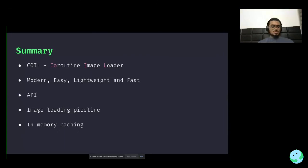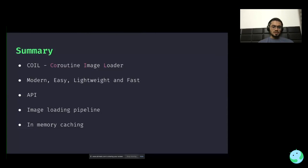This brings us to the end of this talk. To summarize: we saw what COIL exactly is, the various reasons why you should consider this library, how you can utilize the Java and Kotlin APIs, that it has support for Jetpack Compose, and then we talked about the entire image loading pipeline. Finally, we touched upon in-memory caching. I hope you found it very useful.